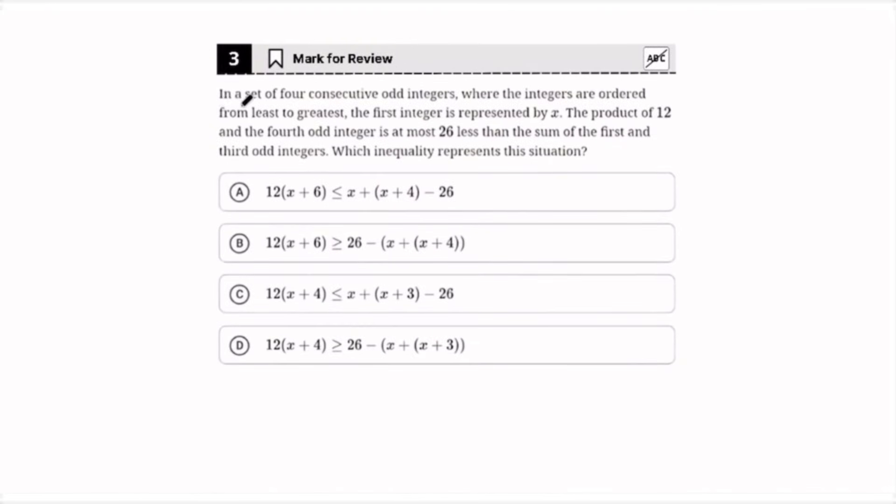In a set of four consecutive odd integers, where the integers are ordered from least to greatest, the first integer is represented by x. The product of 12 and the fourth odd integer is at most 26 less than the sum of the first and the third odd integers. Which inequality represents this situation? Sounds confusing, but it's actually pretty simple. So the first integer is x. So the next odd integer would be if we added 2 to x, right? So then the third odd integer would be x plus 4. And then for the fourth odd integer, it would be x plus 6.